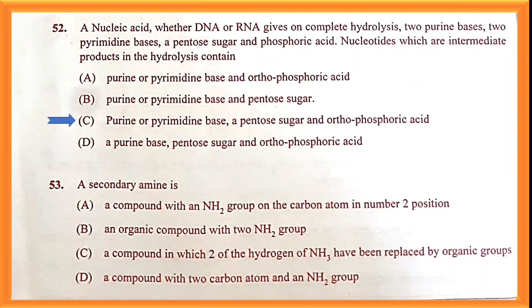Question number fifty-two: a nucleotide contains a purine or pyrimidine base, a pentose sugar, and orthophosphoric acid. Option C is the correct answer. Question number fifty-three: a secondary amine is a compound in which two of the hydrogens of NH₃ have been replaced by organic groups. This is the correct answer.